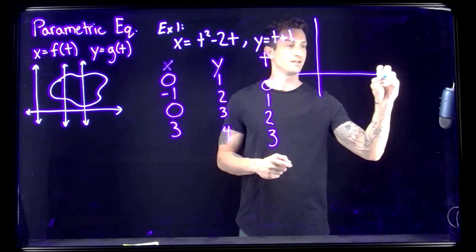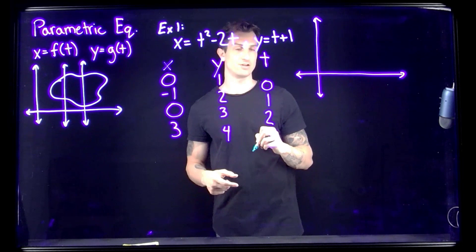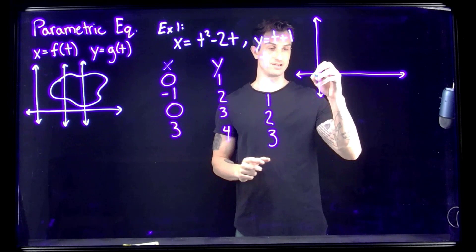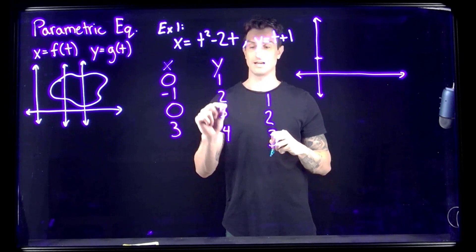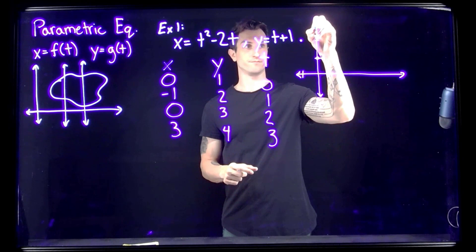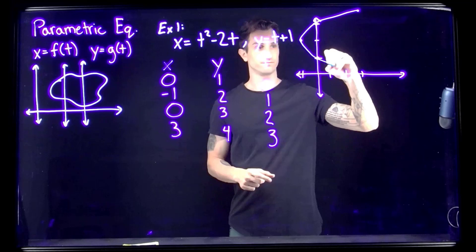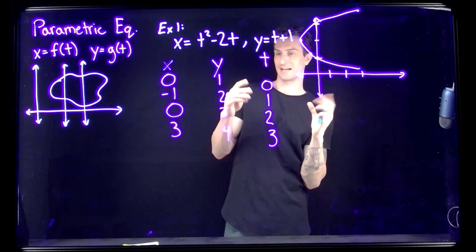It might be a good idea to graph this and see what it looks like. Now, we have three-dimensional triples — how do we graph that in two dimensions? We only focus on the x and y. So we plot (0,1), (−1,2), (0,3), and (3,4), connect the points, and we get something that looks like a sideways parabola.